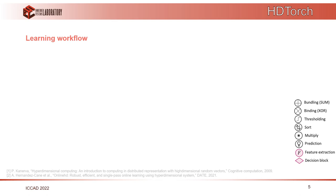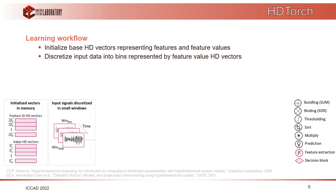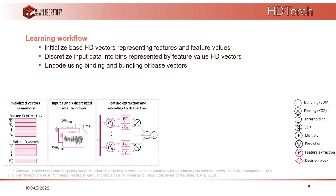How does a typical HD learning workflow look like? Initially, we have to initialize base HD vectors that represent all the features and feature values. Then if we have time series data, we discretize it into windows and extract the features. We then encode these features and their values into HD vectors representing each data window using two operations: binding and bundling. Binding with binary vectors is XORing — we XOR the HD vector representing a specific feature with the vector representing the value of that feature, and repeat for all features. Then we bundle them by bitwise summing and normalizing to get one HD vector representing this data window.